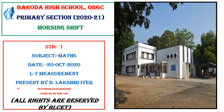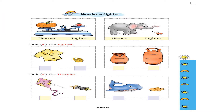We are in the NCERT syllabus mathematics textbook, page number 99 and 100 of the chapter Measurement. Here we are going to compare heavier and lighter things or objects. Heavier means which has more weight, and lighter means which has less weight. Anything which has more weight is called heavy and anything which has light weight is called lighter.